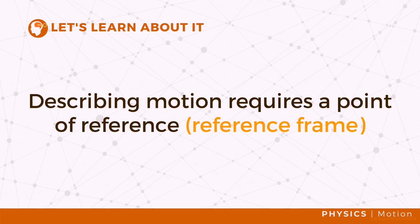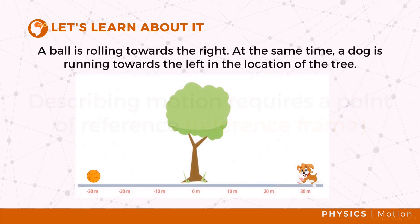Describing motion requires a point of reference or a reference frame. In other words, the distance traveled by an object, how fast the object is traveling, and the direction in which the object travels to is measured with respect to a reference point.